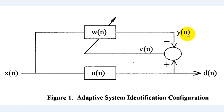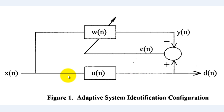In addition to these parts, the system identification and inverse system configurations have an unknown linear system transfer function Un that can receive an input and produce a linear output.